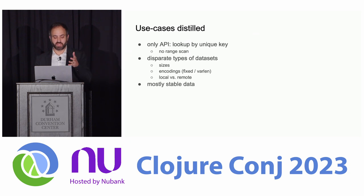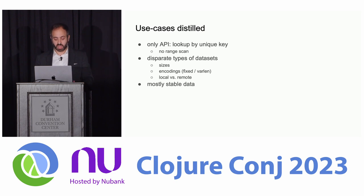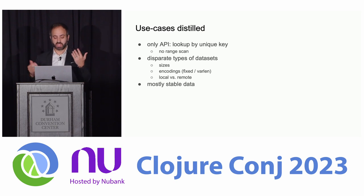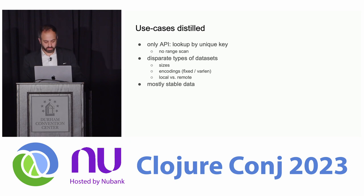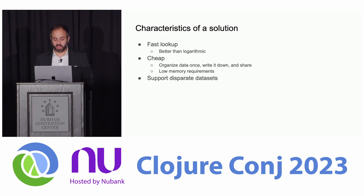This discovery process led to insights about all the use cases. The main insight is look up by unique key is sufficient — none of these services were doing range scans or any other sort of data access patterns. The data sets varied in size, encoding, fixed length, variable length, whether they were able to be local or remote and large. All of these data sets involved stable data, unchanging, just kind of growing. We wanted to do better than linear time, better than logarithmic time, and we started thinking about what the characteristics of a solution were.